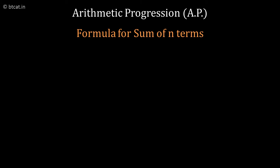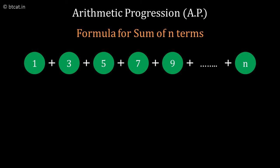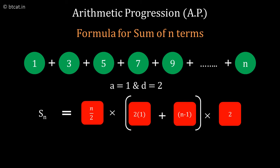For example, I want to find 1 plus 3 plus 5 plus 7 and so on. So here A will become 1 and D will become 2 and N will be till N terms I want to find. So if I put all these in the formula and solve it, I will get N square. And this becomes one more important formula. The sum of first N odd numbers is always equal to N square.